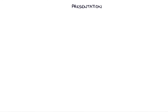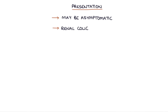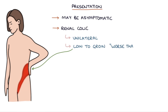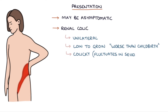Renal stones may be asymptomatic and never cause any issues. A symptom called renal colic is the presenting complaint in symptomatic kidney stones. Renal colic is unilateral loin to groin pain which can be excruciating — some people describe it as worse than childbirth. It's colicky, meaning that it fluctuates in severity as the stone moves and settles in position. Patients with renal colic often move restlessly due to the pain.